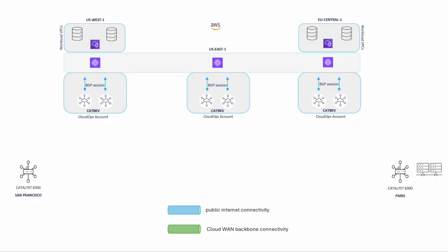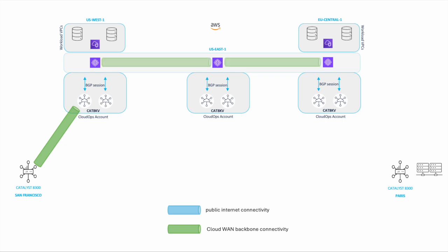Let's look at our physical and virtual resources. In this example, we took a branch in San Francisco, cloud resources deployed in three regions — US West, US East, and Europe Central — as well as one more branch in Paris. Thanks to Cisco Catalyst SD1 integration with Cloud1, we are able to reach from San Francisco over the Cloud Backbone to Cloud DC in Europe and also the physical location in Paris.